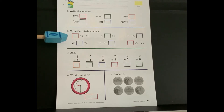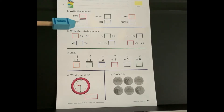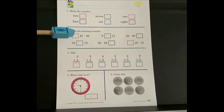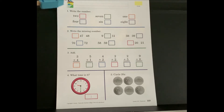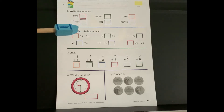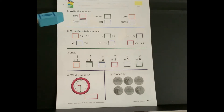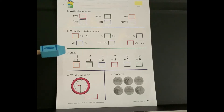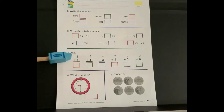Number two, write the missing number. Look at the numbers and write in the box provided the missing number. Some numbers come before, some come after, and some are in the middle. Look at the numbers. Number three, you are going to add.